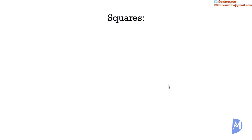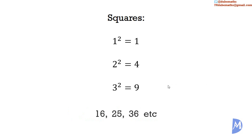We already know that square numbers are 1, which is 1 squared; 4, which is 2 squared; 9, which is 3 squared; 16, 25, 36, etc.